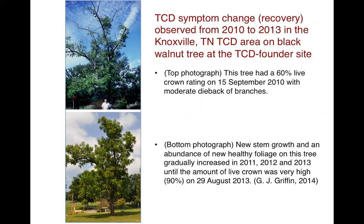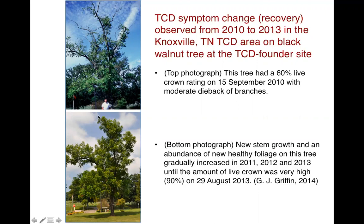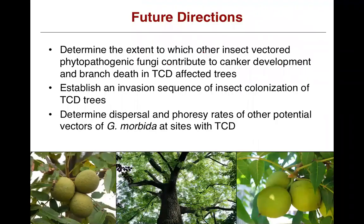In the top photograph, after the drought in 2010, the tree is symptomatic for TCD with about 60% live crown rating and moderate dieback of branches. But three years later, this very same tree appears to have recovered from TCD — there's new stem growth and an abundance of new healthy foliage. The tree gradually increased in crown volume from 2010 onward, and by 2013 was estimated to have about 90% crown.